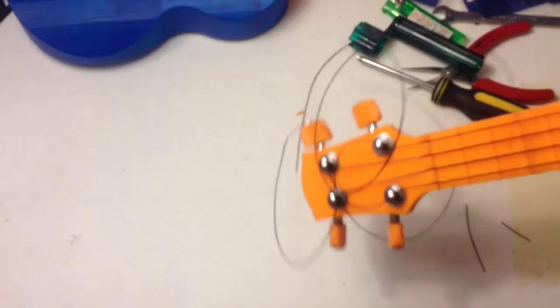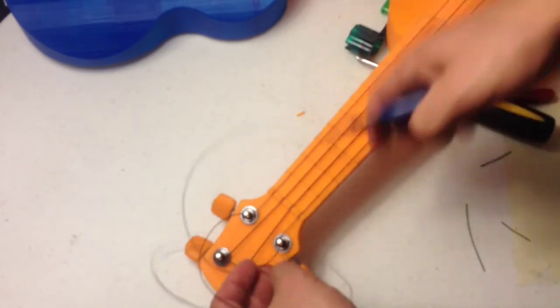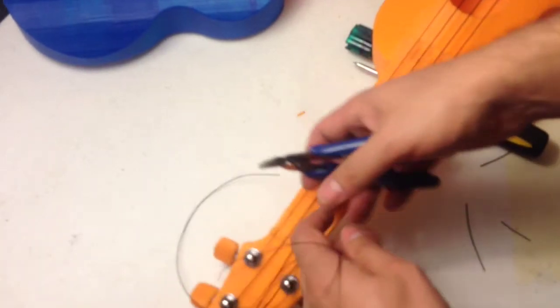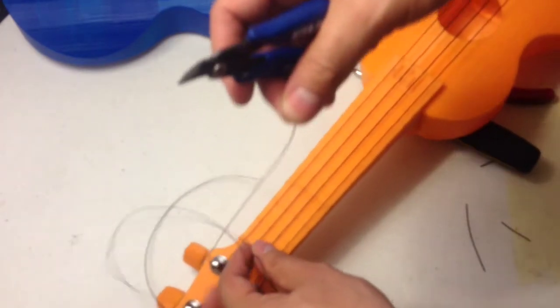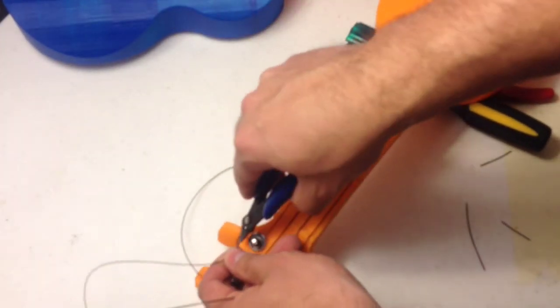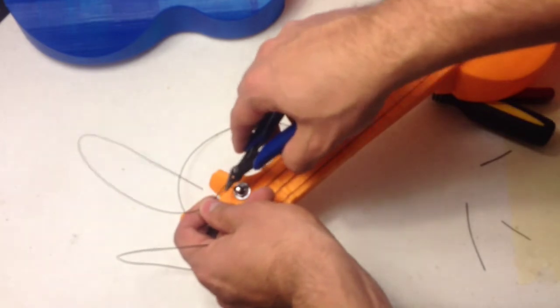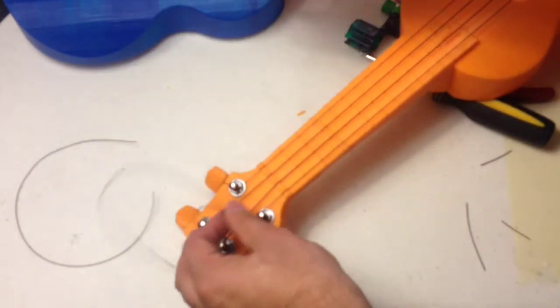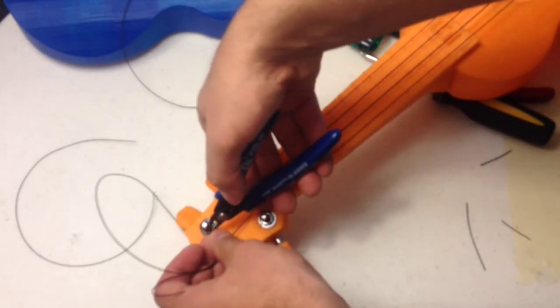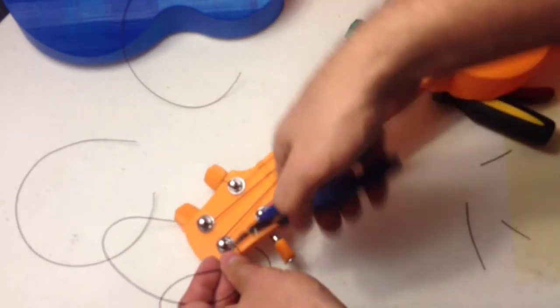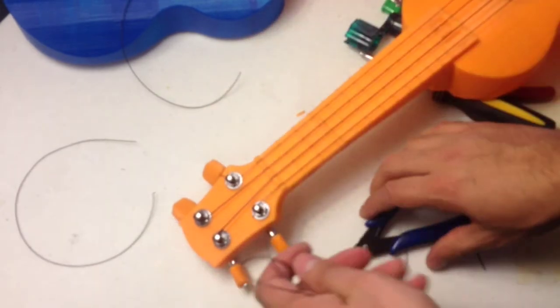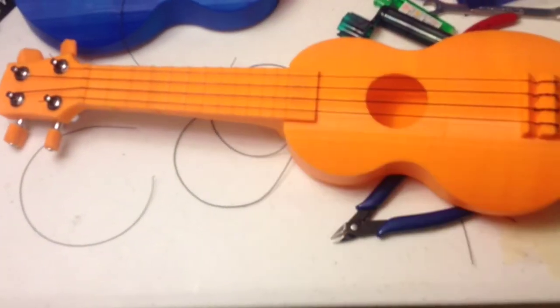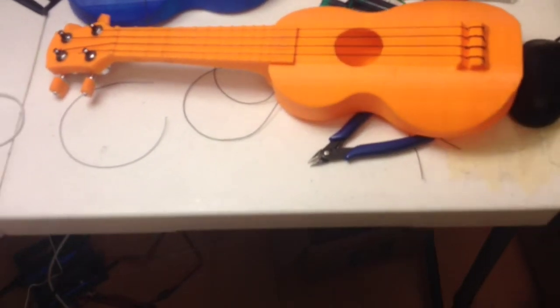And then same thing on this side - just take any kind of wire cutter, leave a little bit on the end. Okay, and after you've done that, your ukulele is now strung.